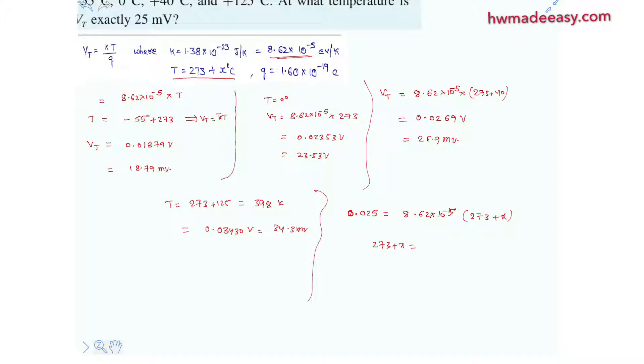By using a calculator we can tell that this is 290.0232. Then x is equals to clearly, by subtracting 273, we'll get 17.023 degree celsius. At this value of temperature in degree celsius, the thermal voltage is exactly 25 millivolt.